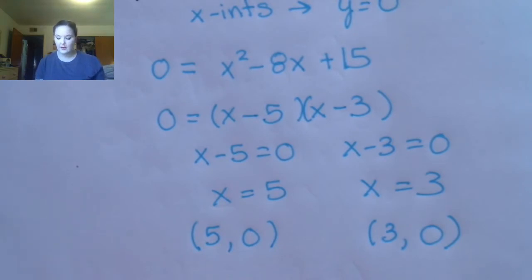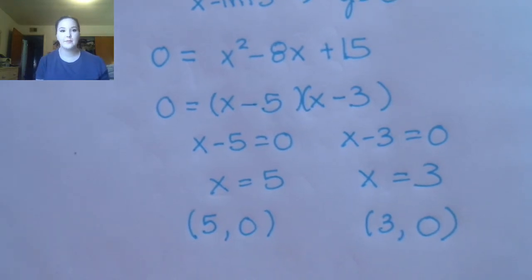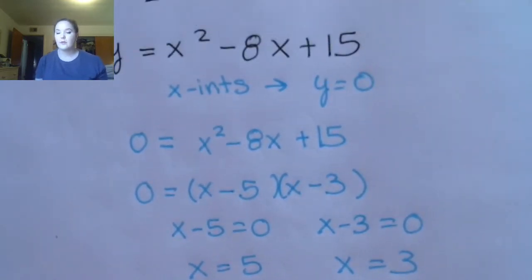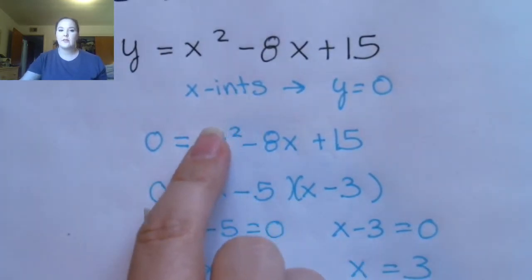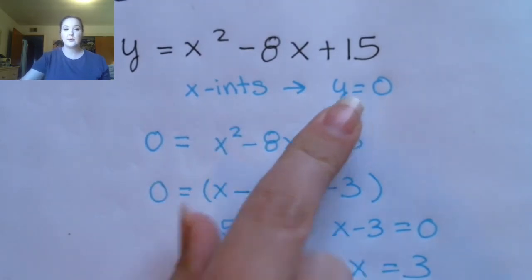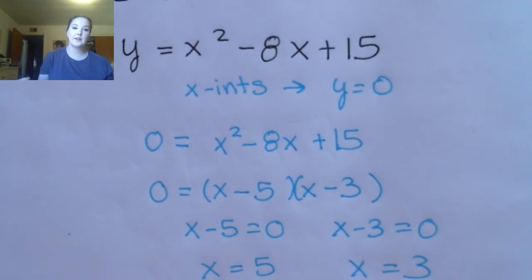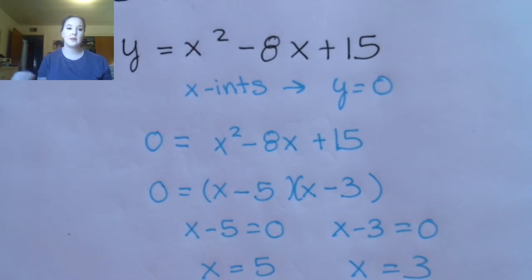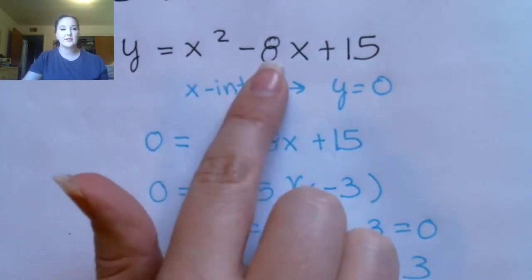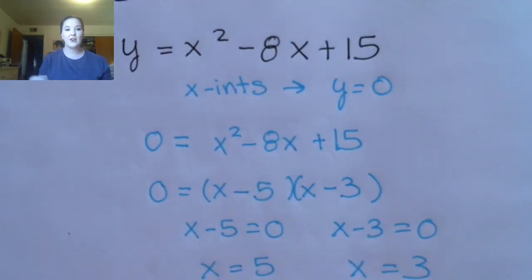Let's talk about intercepts. To find the x-intercepts, you set y equal to 0. I also want to remind you that to find the y-intercept, you would set x equal to 0. That's the same no matter what your function looks like — we talked about that with lines, but it's also true for these quadratic functions. We'll need that later in the chapter when we talk about graphing.